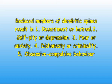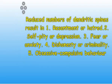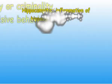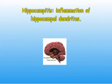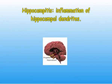2) Self-pity or depression. 3) Fear or anxiety. 4) Dishonesty or criminality. There is often associated obsessive-compulsive behavior when dendritic spine numbers are reduced in the frontal lobes. If the memory center of the brain or hippocampus dendritic spines or leaves are affected, short-term memory and later long-term memory will be decreased. This is referred to as hippocampitis.